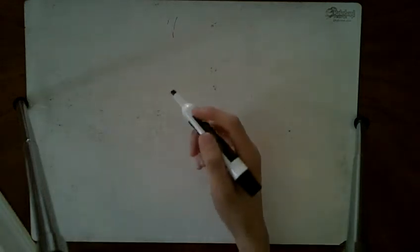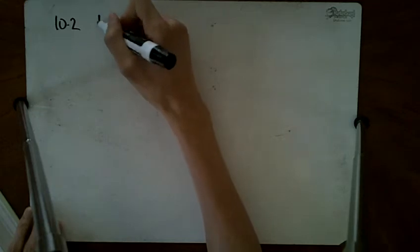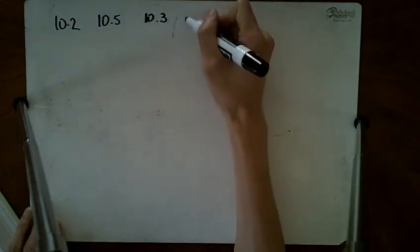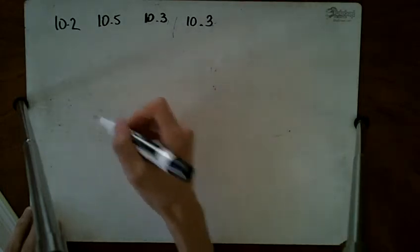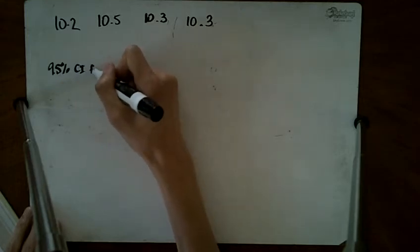In this problem, we're looking at four bags of oranges with weights of 10.2, 10.5, 10.3, and 10.3 pounds. We need to create a 95% confidence interval for the mean weight.